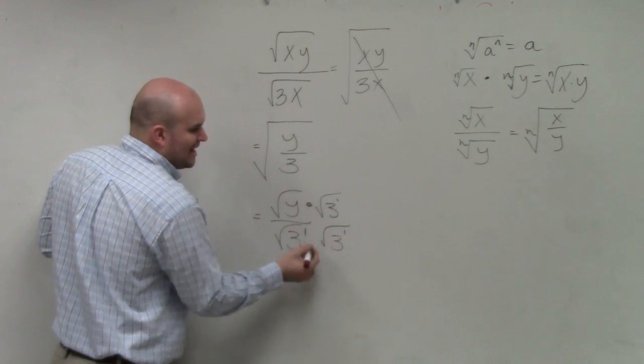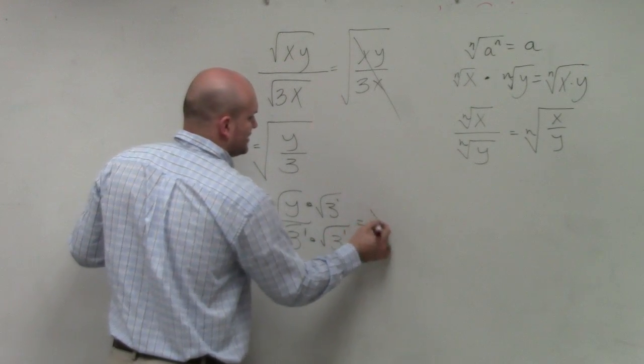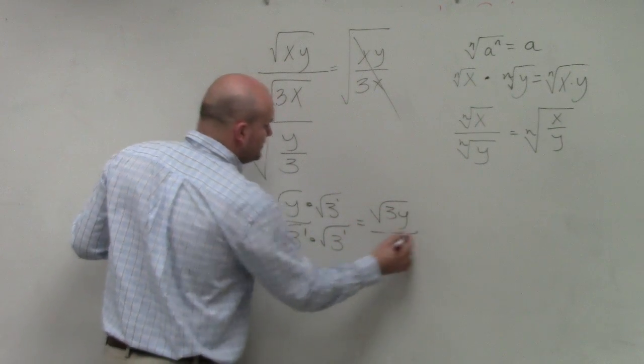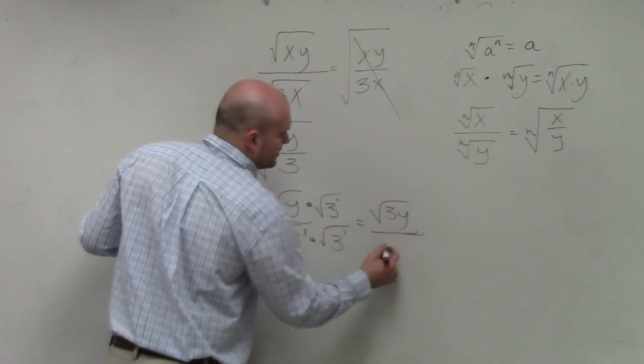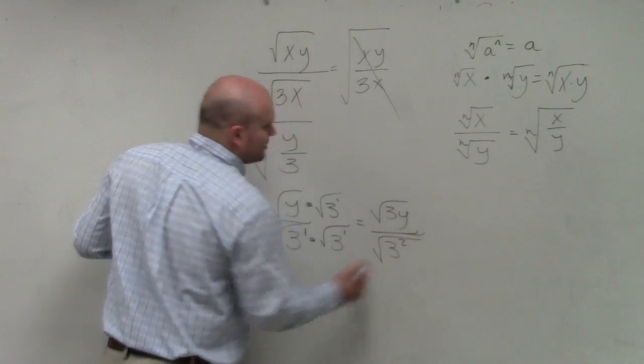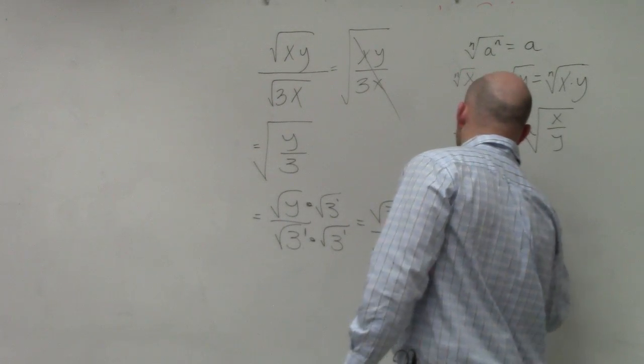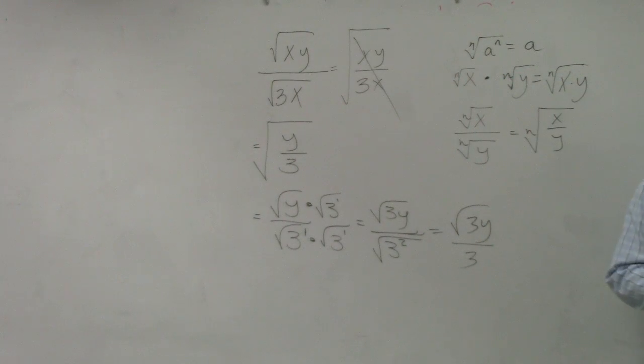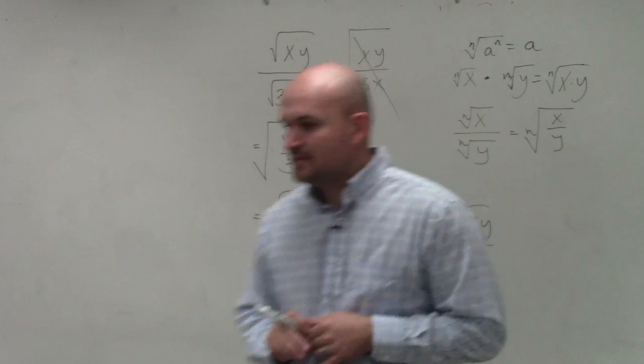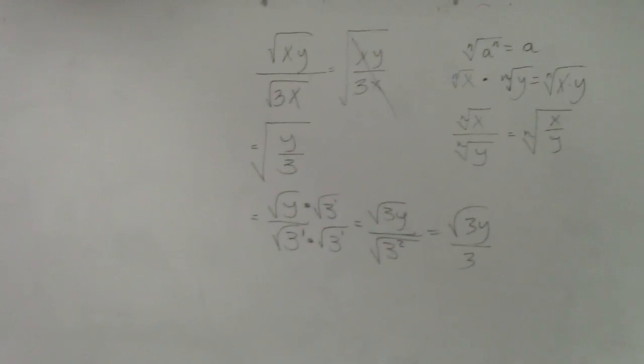So when I multiply, you have to do whatever you did in the denominator, you have to do the numerator. Over here, you get the square root of 3y. Over here, you get 3 square root of 3 squared. And what's the square root of 3 squared? 3. Now, I have simplified my problem with no radical in the denominator, which is called rationalizing the denominator, all right? I'm actually going to do one more example because that was kind of bad.